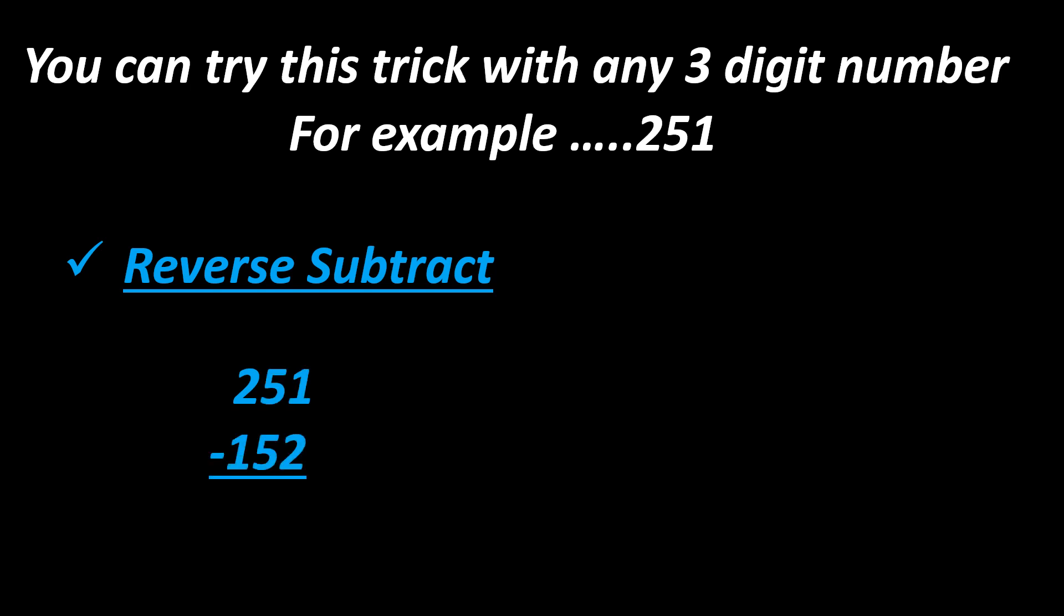Say, for example, your number is 251. Now reverse subtraction: smaller number from bigger number, that is 251 minus 152. You get answer 99, but here don't forget to put 0 at the hundreds place. Remember, it should be a three digit number, so write 099.